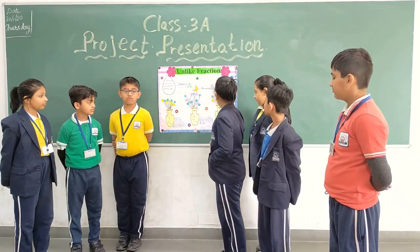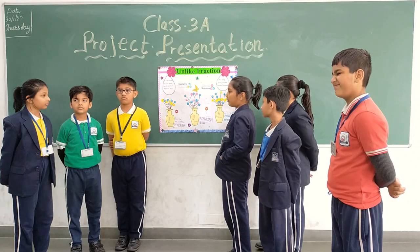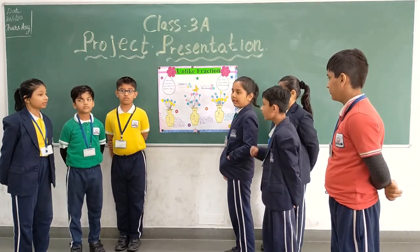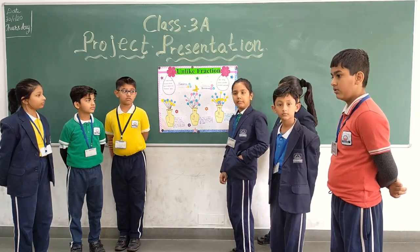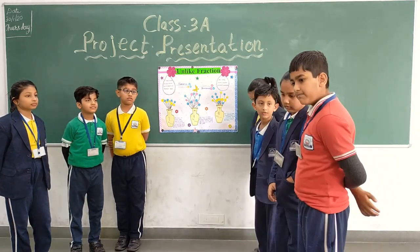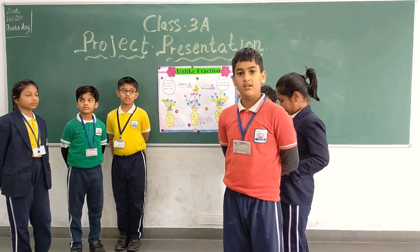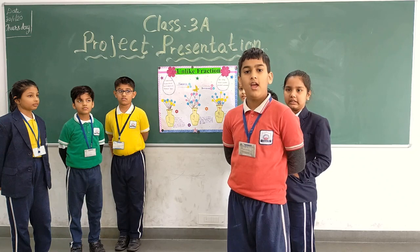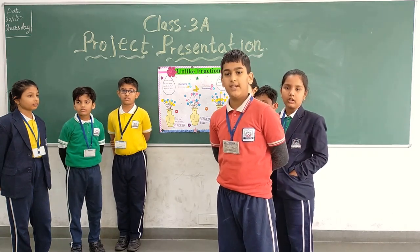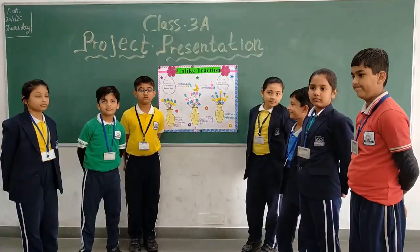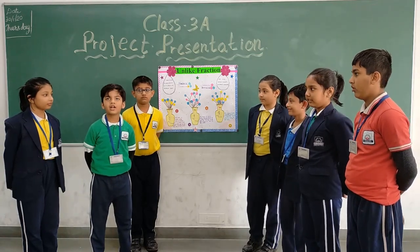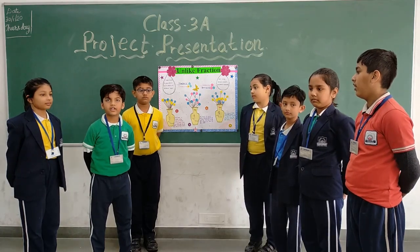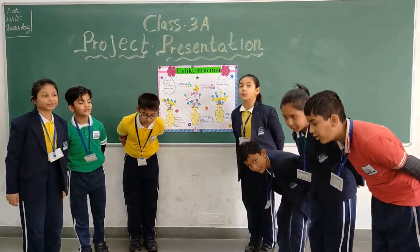In the next bud, there are a total of 13 flowers and out of them 6 are blue. So we can say 6 out of 13 flowers are blue in this bud. So 4/9, 5/10, and 6/13 are represented as unlike fractions, showing different parts of different objects with different numerators and different denominators. Thank you!